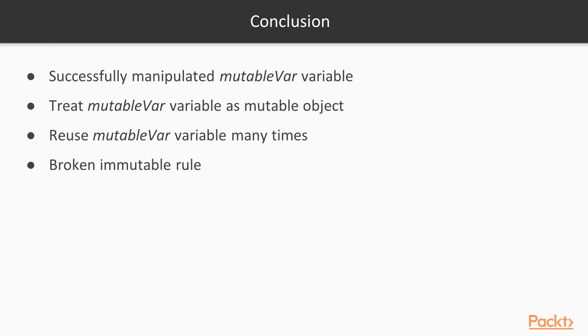However, we are treating the mutable var variable as a mutable object, because we reuse the mutable var variable many times. In other words, we have broken the immutable rule we saw earlier.